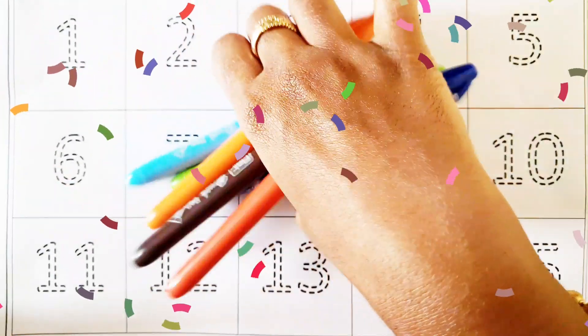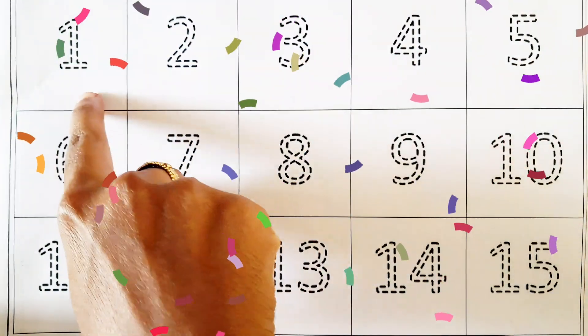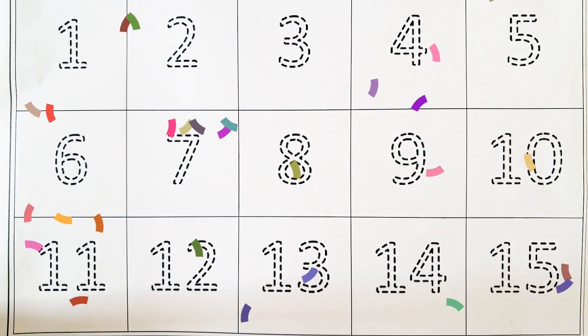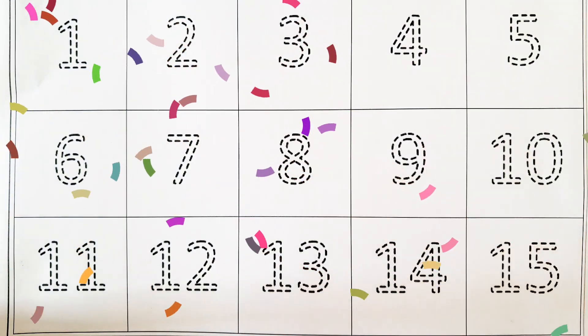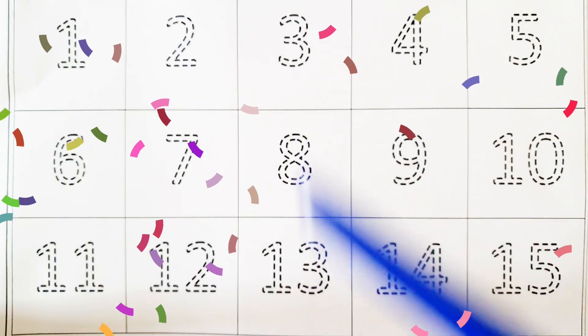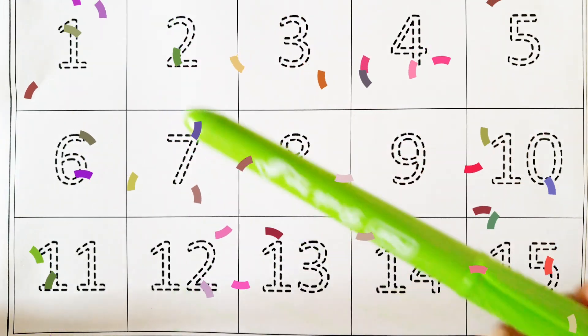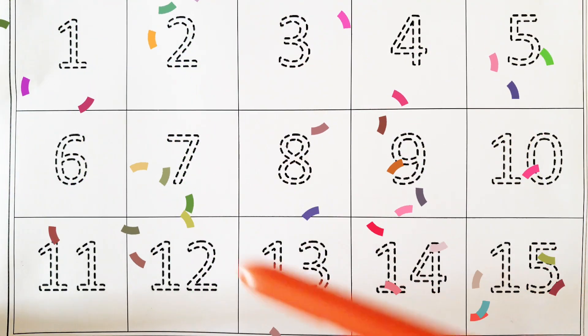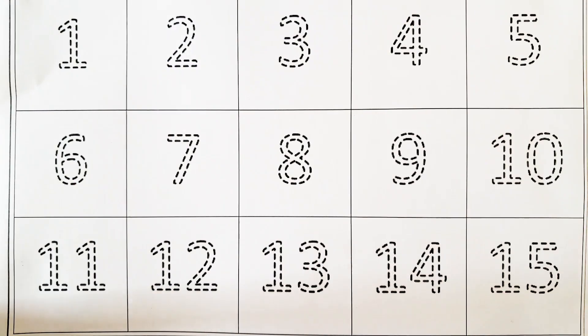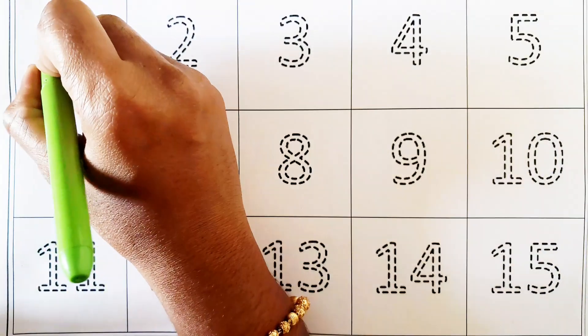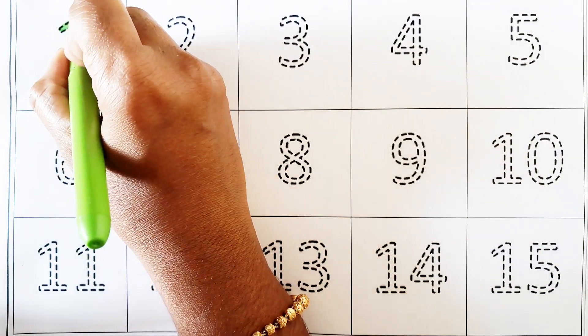Hi kids. Learn numbers 1 to 15. Learn some colors: orange, brown, blue, pink, light green, red, sky blue. Number 1.